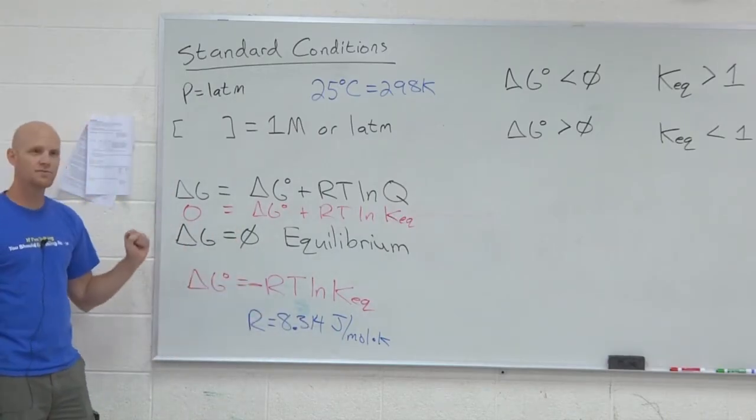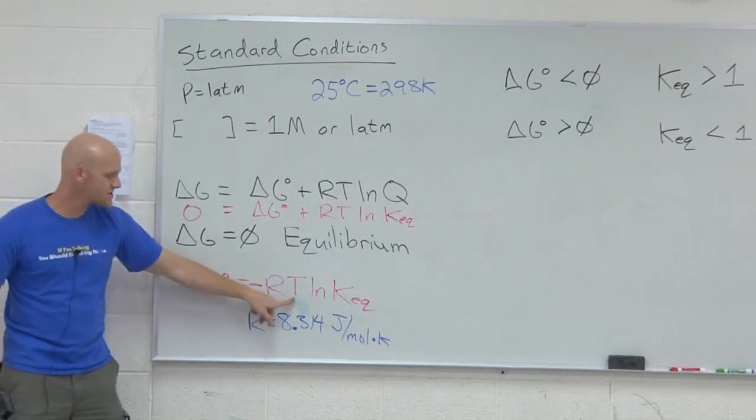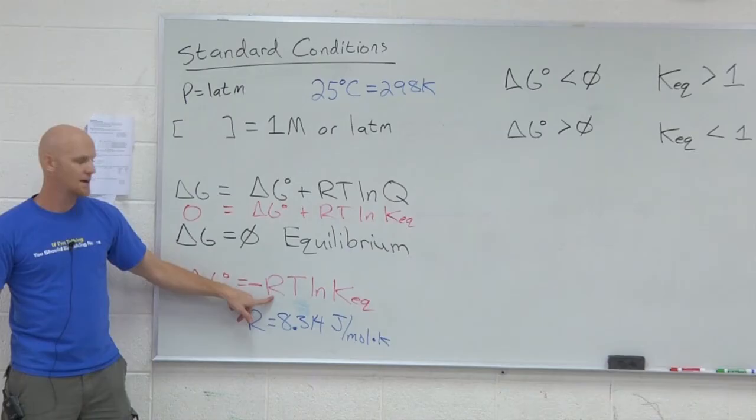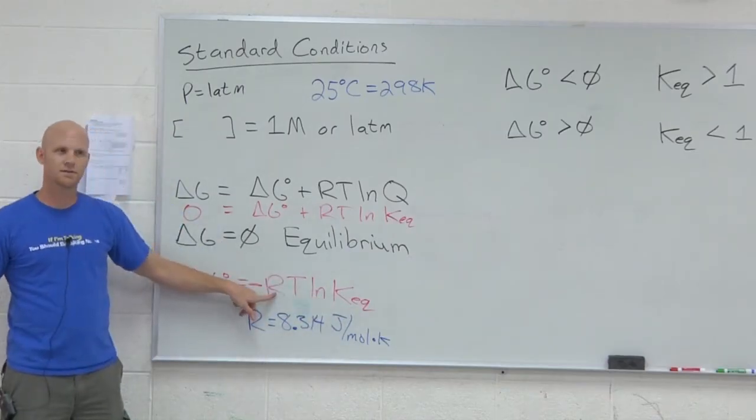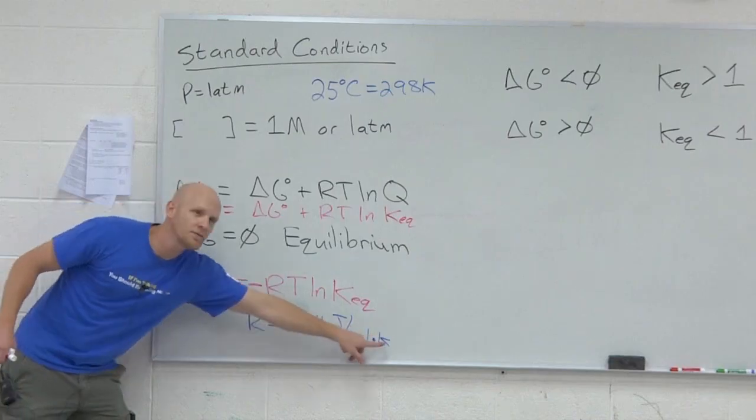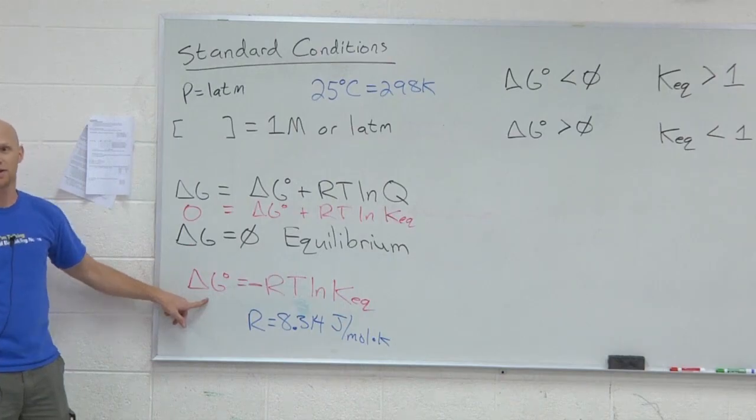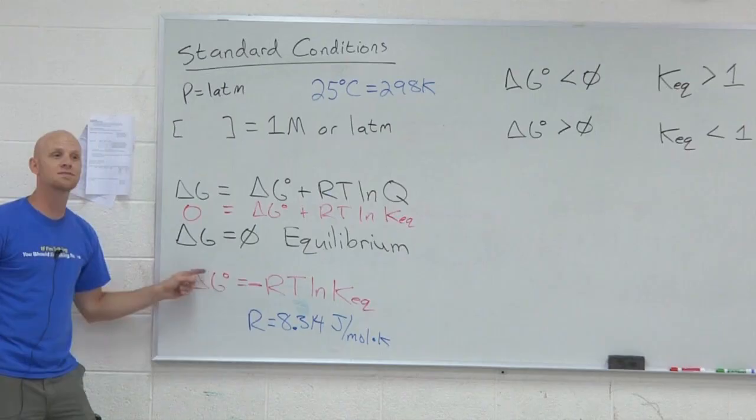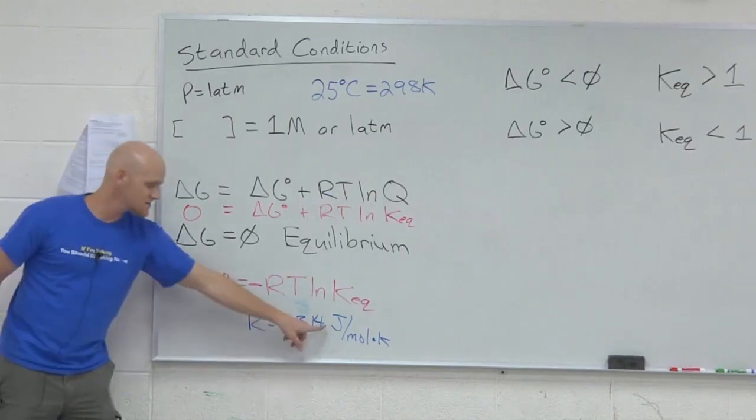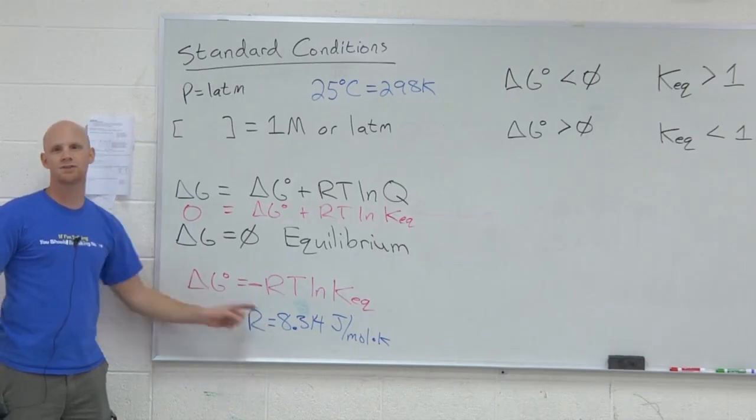But here, you've got to be careful. Let's say I give you delta G standard and a temperature, and R, and I say, what's KEQ? Well, what does R have units of? Joules per mole Kelvin. What does delta G standard usually have units of? Kilojoules. So when you go to divide R through, you better make sure delta G standard and R have the same units. Because this is usually given R in joules, but delta G standard in kilojoules, you better make a match.